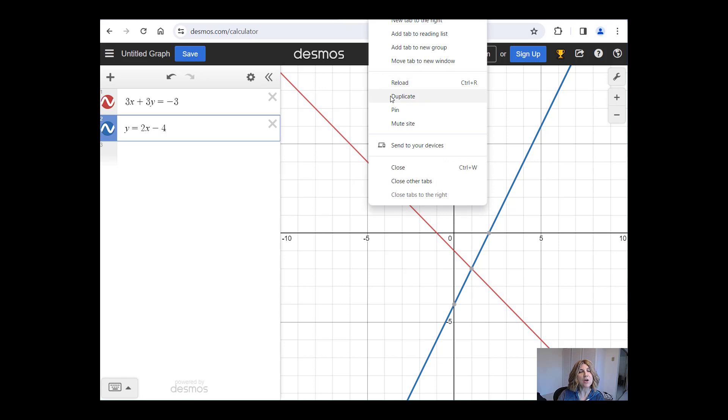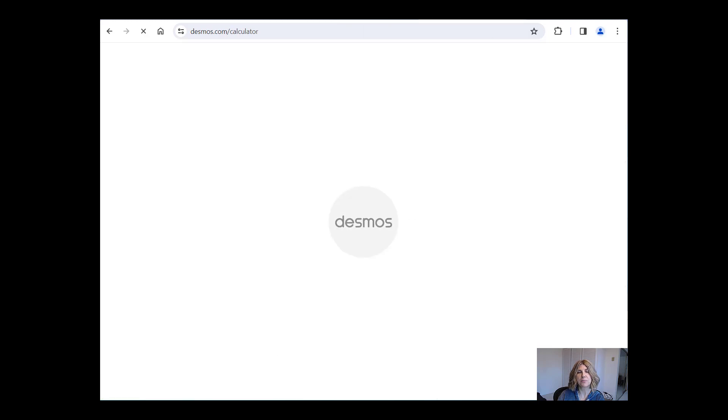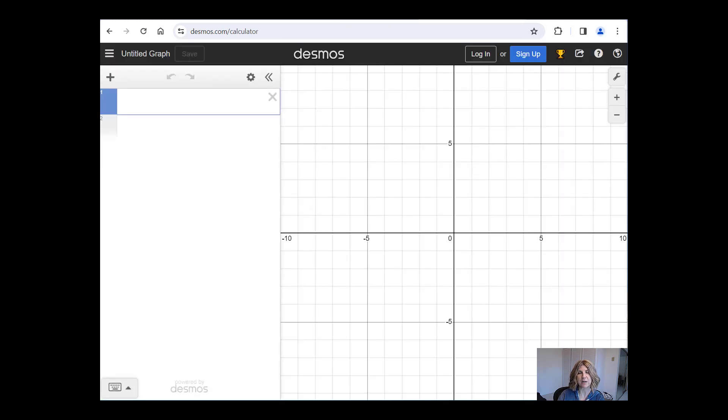So that's all well and good when we have a single solution point. But what happens when we have one of the special cases? As you might have seen, sometimes you get two lines that don't meet at all, and sometimes you get two lines which, when you graph them, you get the same exact line. Well, let's see what happens when we use Desmos to solve the special cases.